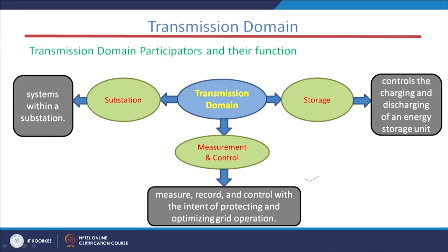If you look at the block diagram of the transmission domain, we have three parts. The first one is substation, the second one is measurement and control, and the third one is storage. The substation helps in maintaining all the equipment used in the transmission system — we have transformers, measuring equipment, protecting equipment, and metering equipment.